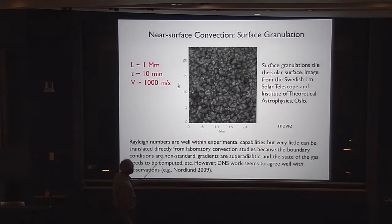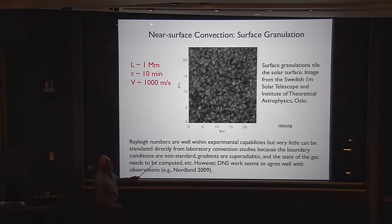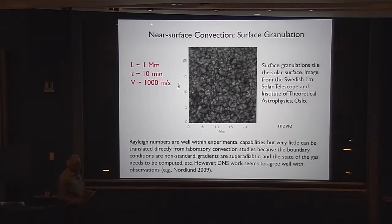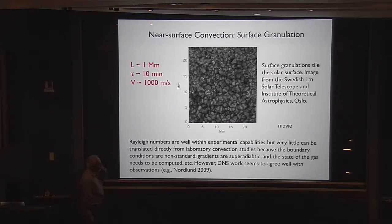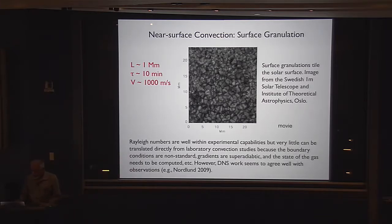The Rayleigh numbers are well within experimental capabilities, but very little can be translated directly from laboratory convection studies because the boundary conditions are not standard and the state of the gas must be computed at each step. Direct numerical simulation — which solves the equations of motion on a computer — seems to produce results that agree with observations in terms of the lifetime of these granules and how big they are. So let me say that part is understood.